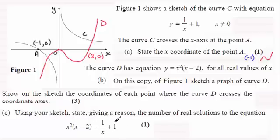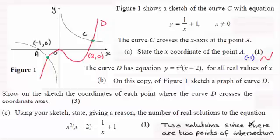So this has got to be at the point of intersection of the curve D with the curve C, and you can see there's only two points of intersection, one here and one here. So the number of real solutions must be two. So just to summarize then, there's two solutions since there are two points of intersection. Okay.